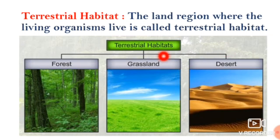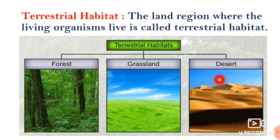Some examples of terrestrial habitat are forest, grassland, and desert. Observe here — forest, grassland and desert are some examples of terrestrial habitat. The mountain region where living organisms live is also called terrestrial habitat.